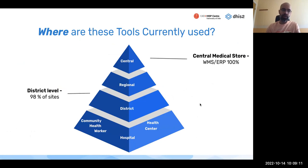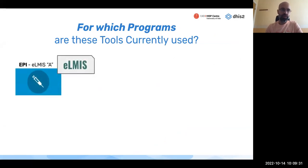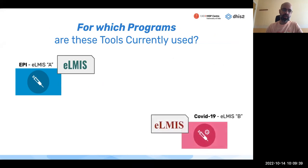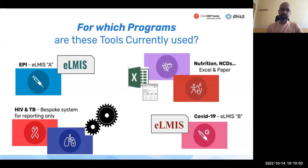The picture is often mixed: at district level you may only be covering part of the sites, at facility level even fewer, and community health workers may have only a pilot running. For different programs you may have an immunization program with one type of LMIS, a COVID-19 solution brought in quickly due to pandemic urgency, a bespoke system for HIV/TB used only for reporting, and other programs still using paper or Excel.